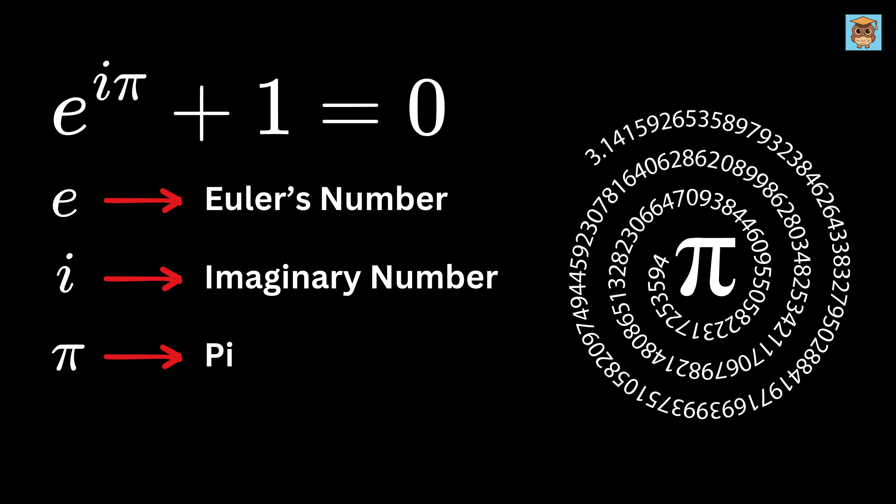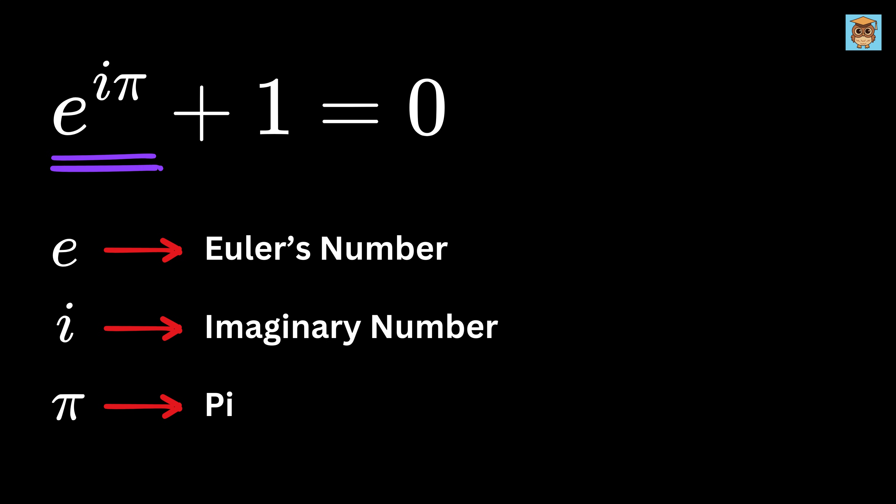π, the famous ratio of a circle's circumference to its diameter. Then all of them clubbed together this way, when added with 1 gives 0.